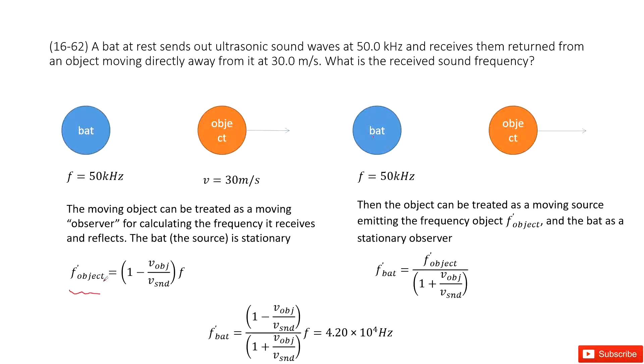This one. So now this is the frequency the object received, frequency f_object_plus. And then using this equation we can get the f. This is the source by the bat.